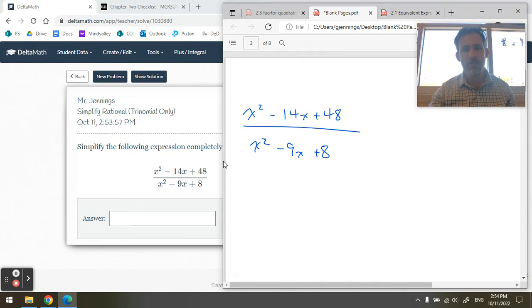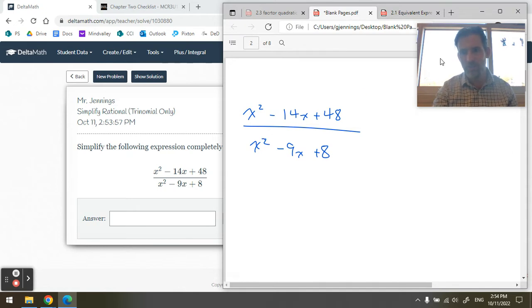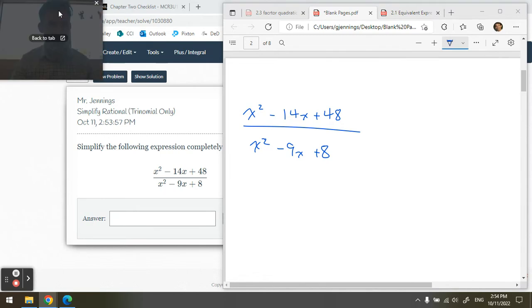So this is a function divided by another function to create a third function. And we want to simplify it as much as possible. So let's factor the top, and I'm going to play an X game here.